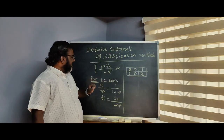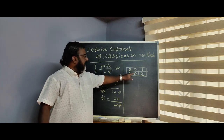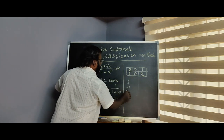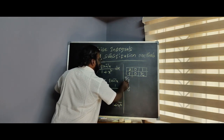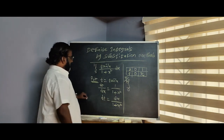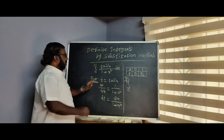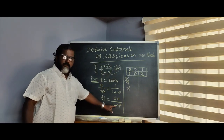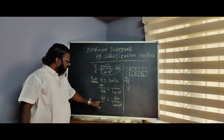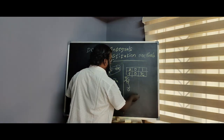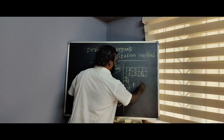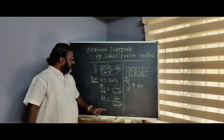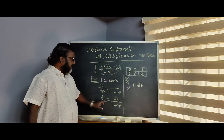So the new limits are 0 to pi by 4. The integral becomes integral from 0 to pi by 4 of t dt, since tan inverse x is replaced by t and dx by 1 plus x squared is replaced by dt.